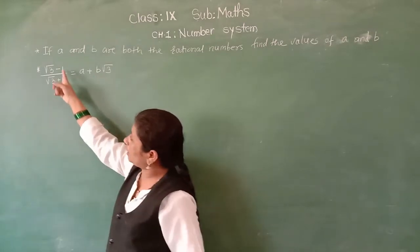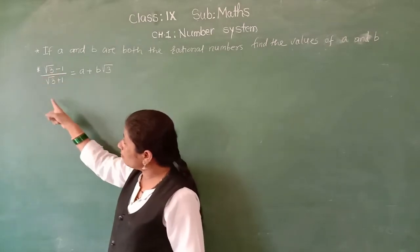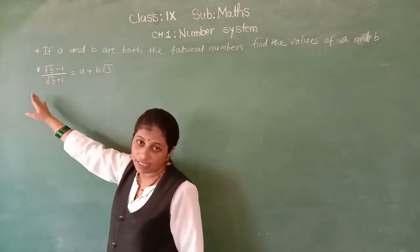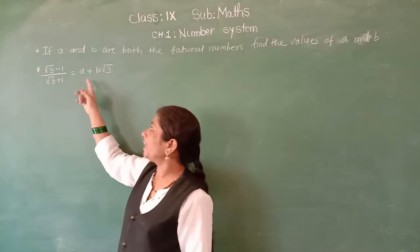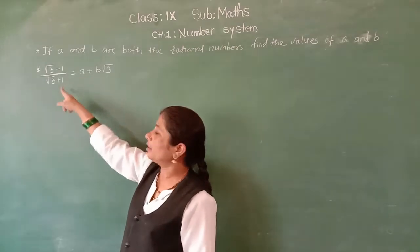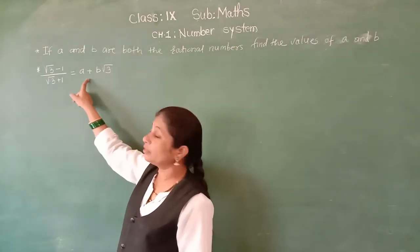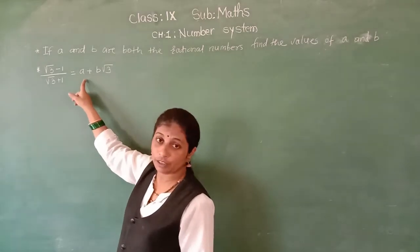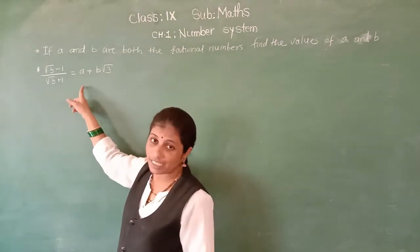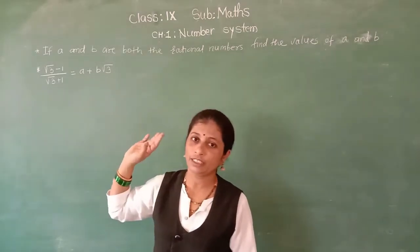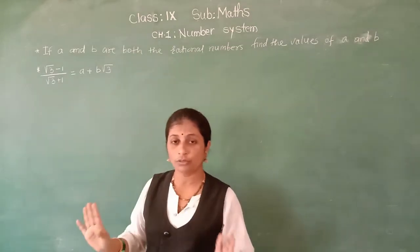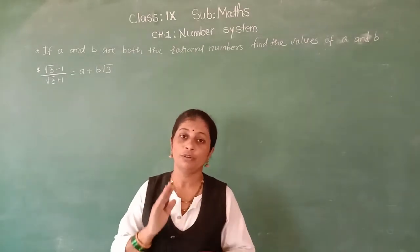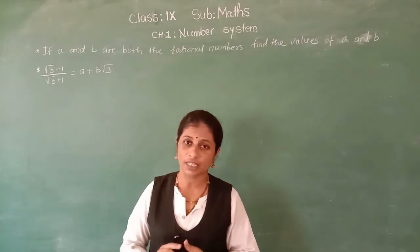Means after simplifying the left hand side of this, you will get a number in this form. From that we have to find out what is A and what is B. Simply, we have to do the rationalization of the denominator and solve up to the final steps.